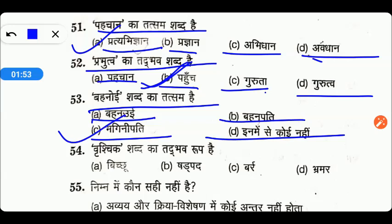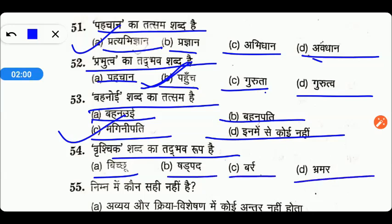Next, the objective question — options हैं: बिच्चू, षट्पद, बर, या फिर भ्रमर। तो friends, अगर हम 'वृश्चिक' शब्द के तद्भव रूप की बात करें, तो यहाँ पर इसका right answer होगा A — बिच्चू।